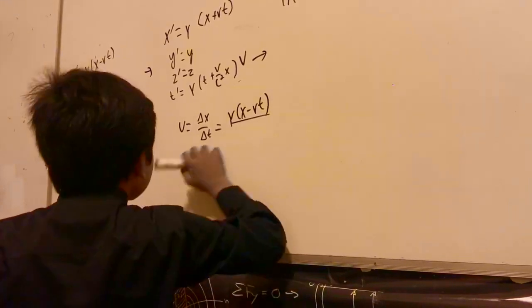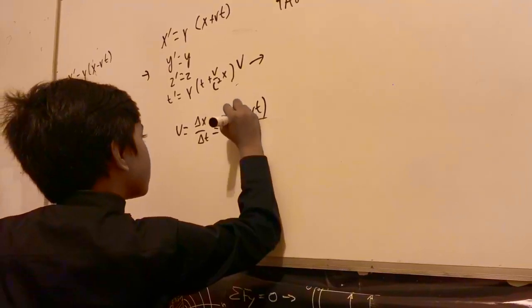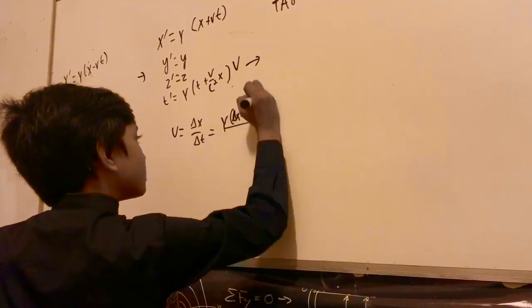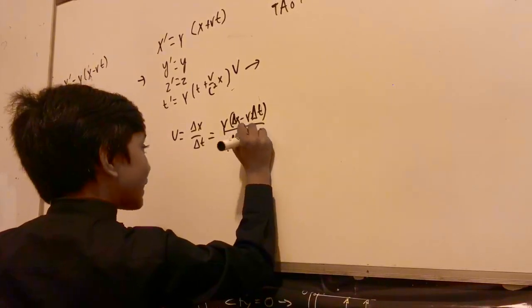Okay, now we have this, which is going to be... Oh yeah, I forgot. You have to put this: V delta t, T minus v over c squared x.